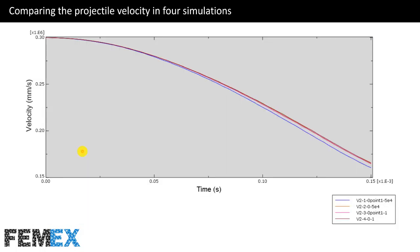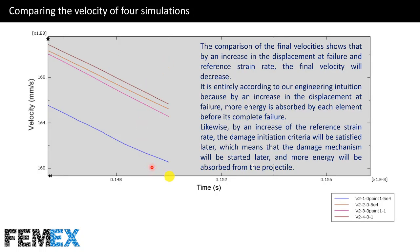Now I want to compare the projectile velocity in the four simulations. All of them start from the initial velocity of 300 m/s and all decrease during the simulation. The comparison of the final velocities shows that by an increase in the displacement at failure and reference strain rate, the final velocity decreases. This is consistent with engineering intuition: by an increase in displacement at failure, more energy is absorbed by each element before complete failure; likewise, an increase in reference strain rate means damage initiation starts later and more energy is absorbed from the projectile.